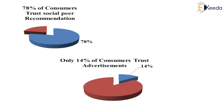78% of consumers trust social peer recommendations, and only 40% of consumers trust advertisements. So, when people share something on social networking websites and like something, it helps others decide — yes, we can buy this product.